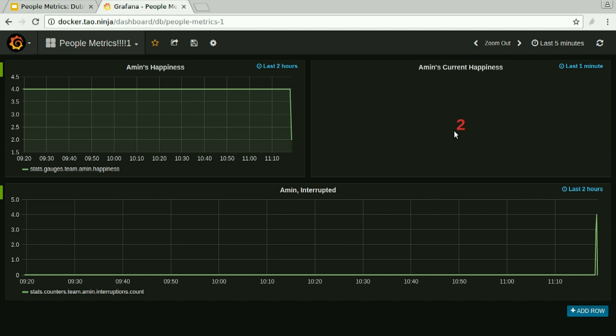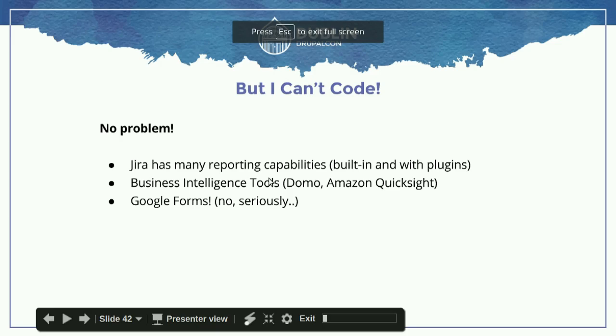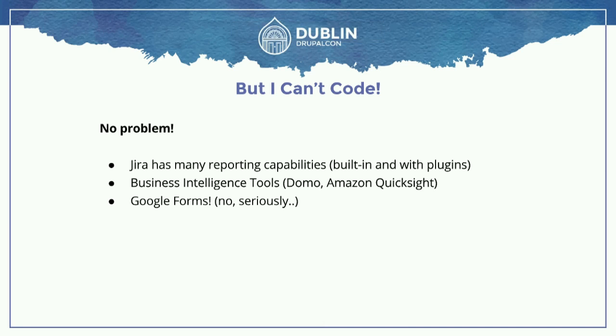I fired this up in a Docker container this morning — it was really easy to generate this, so I think it'll be really easy for you folks to do so also. But that bash stuff was really awful to read, and what if I'm not a programmer at all and really want to do this metric stuff? Not a problem.